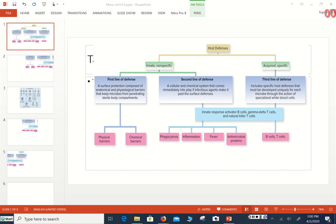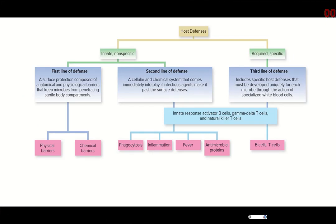Hello class. Today we're going to talk about the immune system. Chapters 12 and 13 of your textbook cover host defenses, which is basically the immune system. I already have for you this chart, which is what I'm going to use to summarize everything. You're welcome to follow along and annotate this chart. What you see here is that the immune system is comprised of three different levels.